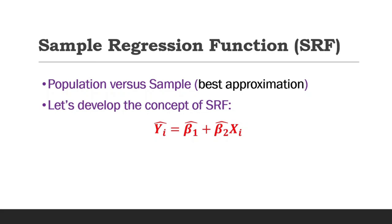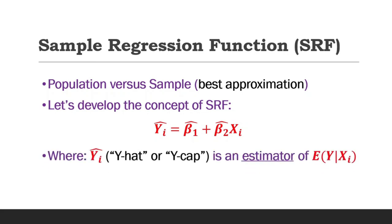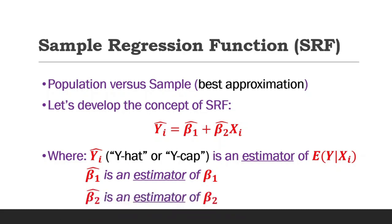The dependent variable is read as y hat or y cap, which is an estimator of the population y, or more specifically, the expected value of y given x values. Beta 1 cap is an estimator of the population parameter beta 1, and beta 2 cap is an estimator of the population parameter beta 2.